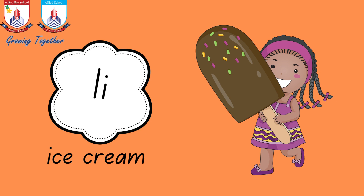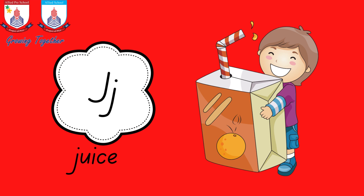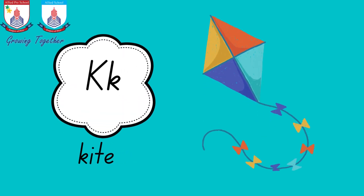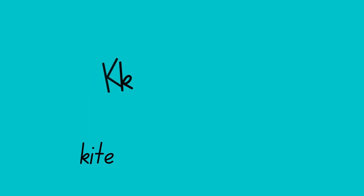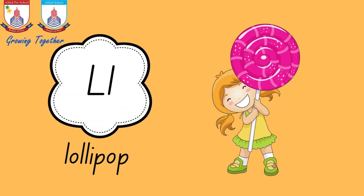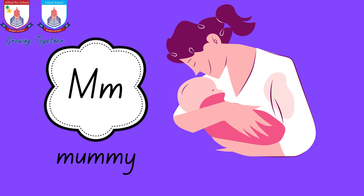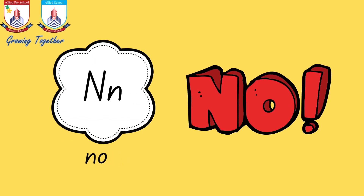J is for j-j-juice, j-j-juice. K is for c-c-kick, c-c-kick. N is for n-n-no, n-n-no.